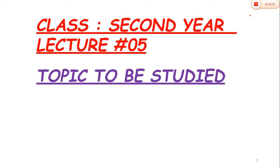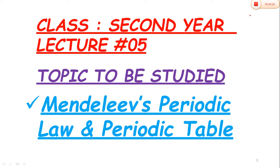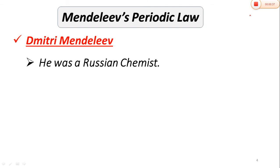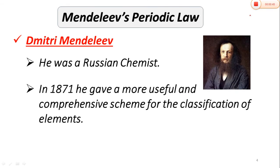Only one topic will be discussed in detail, that is Mendeleev's Periodic Law and Periodic Table. First of all, we have some introduction about the scientist whose name is Mendeleev. He was a Russian chemist. In 1871 he gave a more useful and comprehensive scheme for the classification of elements, which was named Mendeleev's Periodic Law. This law arranged the elements in a table in a useful way.